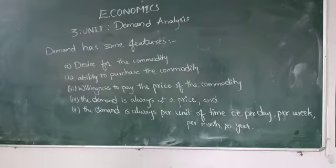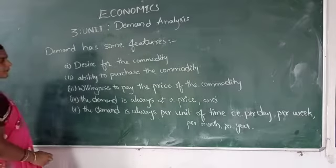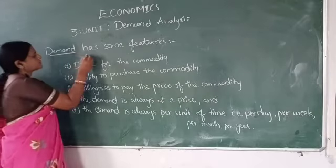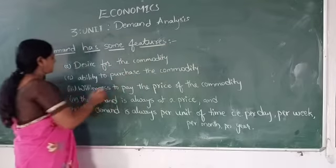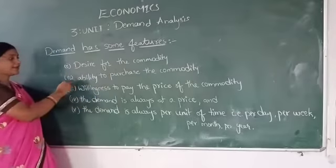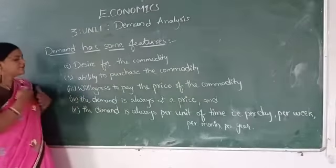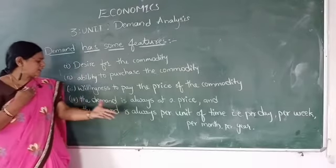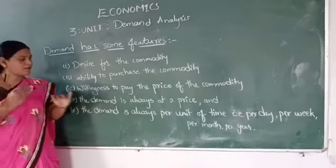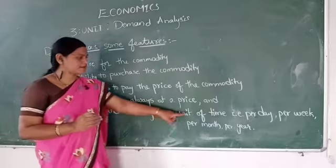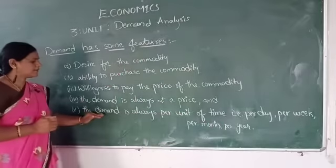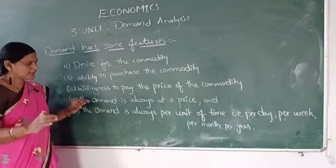Demand has some features. First, desire for the commodity. Second, ability to purchase the commodity. Third, willingness to pay the price of the commodity. The demand is always at a price. And demand is always per unit of time — for example, per day, per week, per month, per year. Demand has a time period.